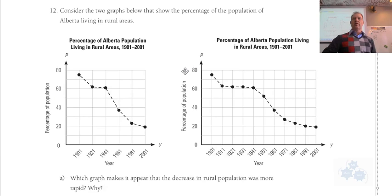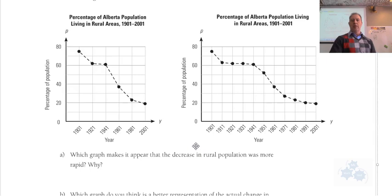Number 12 says this: Consider the two graphs below that show the percentage of the population of Alberta living in rural areas. The percentage of Alberta population in rural areas from 1901 to 2001, and then percentage of population living in rural areas, 1901 to 2001 as well. These are graphs that look like they're measuring the same thing. Which graph makes it appear that the decrease in rural population was more rapid? The first one. The first one appears that the drop was more rapid. Look at how steep these lines are compared to this, which looks like a pretty gradual kind of decrease. This one here drops off the map. So we're missing some points here, and the years are compacted. Even when you have a smaller scale, you can have a graph that looks pretty weird.